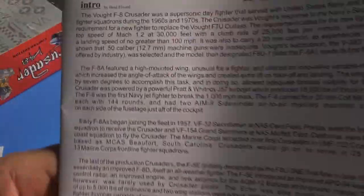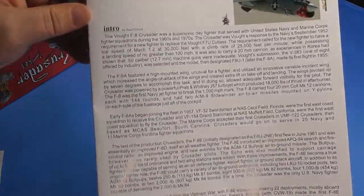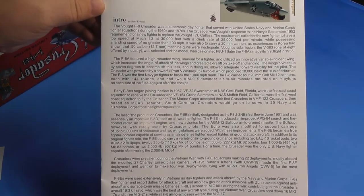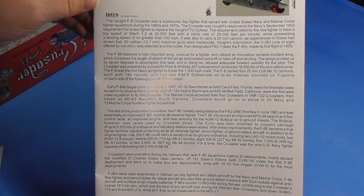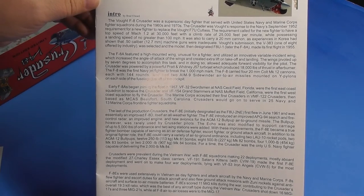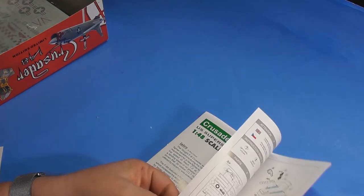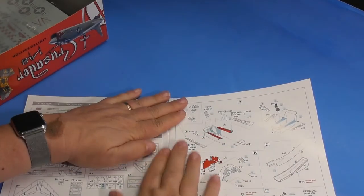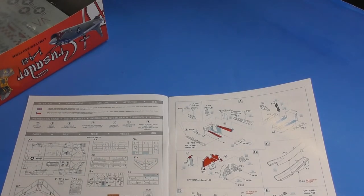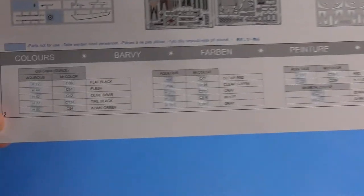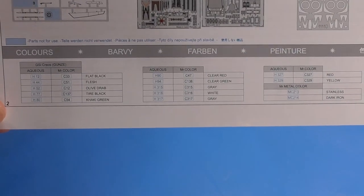And instructions. It's all in English. So there's the description of the aircraft. The F-8E. Sprue maps. Photo etch. Masking parts. The blue you don't use for this version. Color call outs. Usual. Aqueous. Mr. Color.